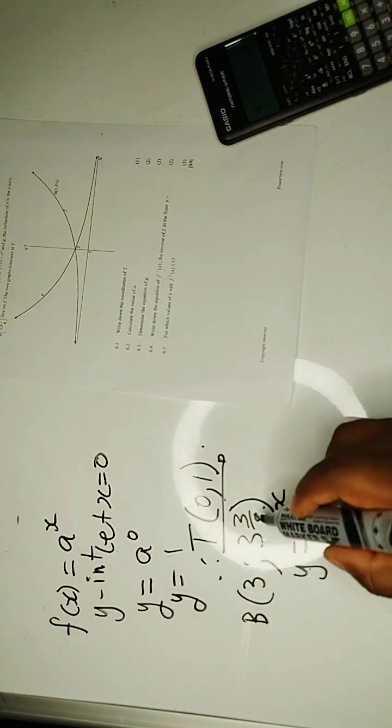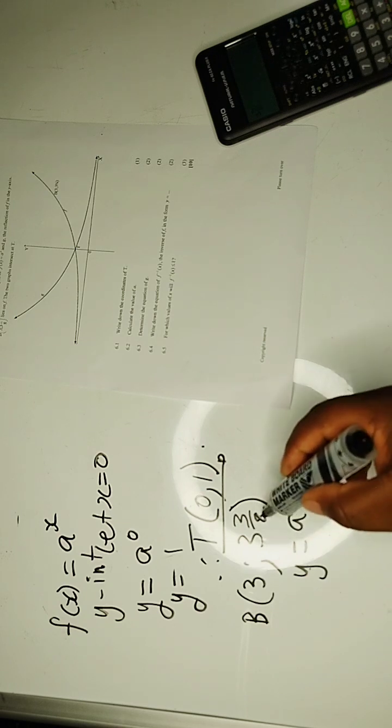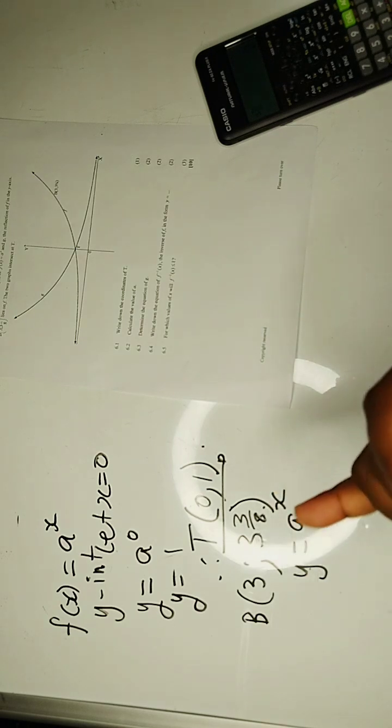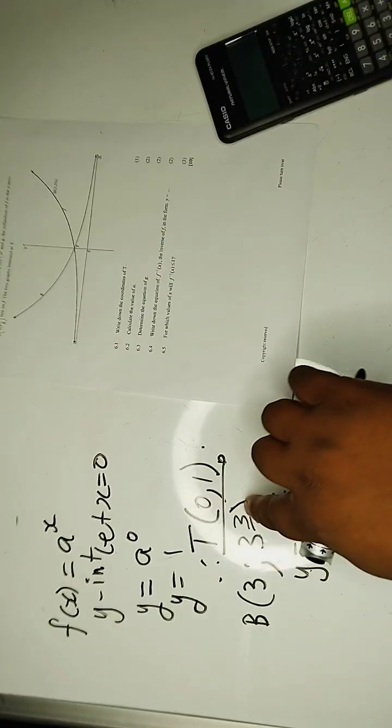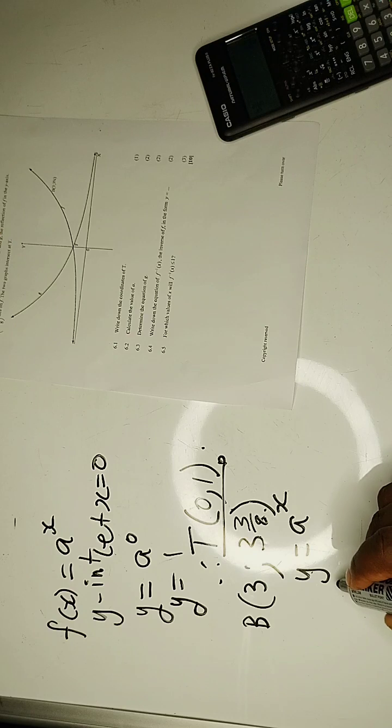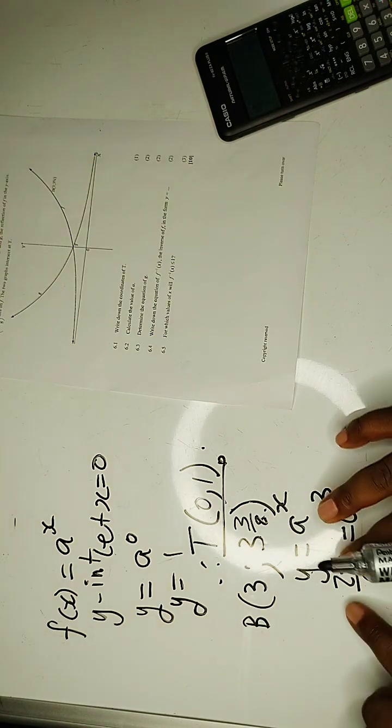On Y, we have this 3, A times 3. What is A times 3? We know that is 8, 16, 24. 24 plus 3 is 27. So, this will be 27 over 8 is equals to A exponent 3. Now, let's check this.